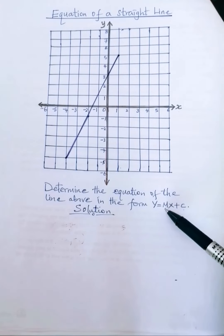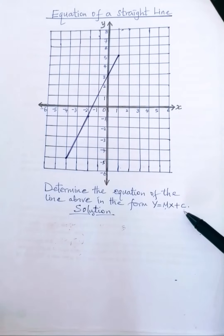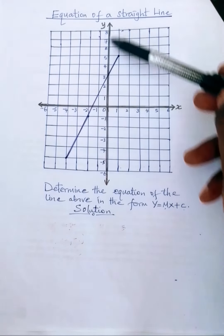m is the gradient of the line and c is the y-intercept. The y-intercept is a point where the line crosses the y-axis.